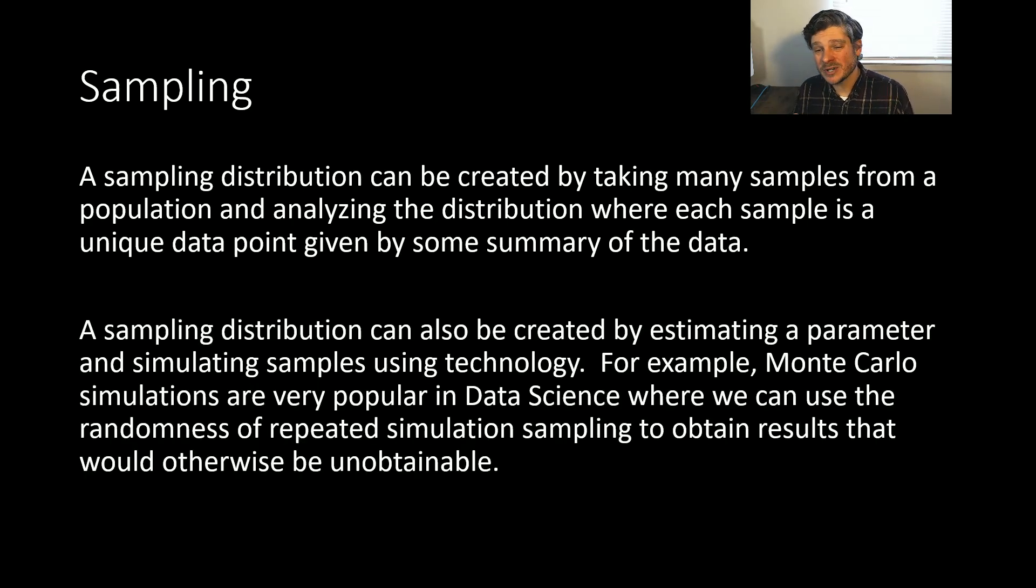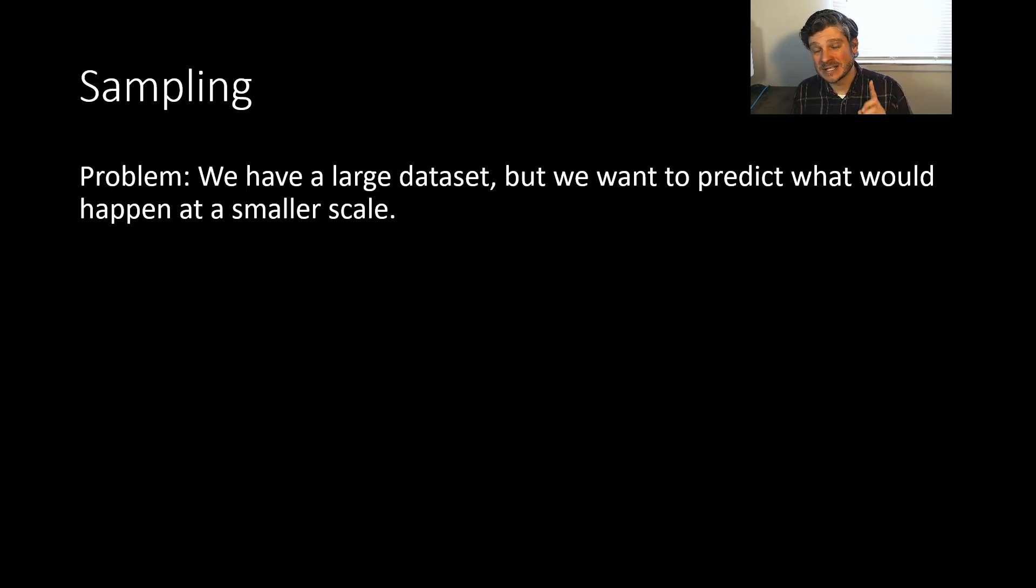But we can also create sampling distributions by estimating parameters and then using technologies to do simulations. For example, Monte Carlo simulations, which are a very popular and useful technique when it comes to data science, particularly forecasting future events where we have some unknown parameters. These Monte Carlo simulations can create our distributions, which gives us a really great range of outcomes that lets us predict what will happen when otherwise that would be an unobtainable result given our data. But we'll save that for another time. In this case, we just want to talk about sampling and how I can use sampling with large data sets.